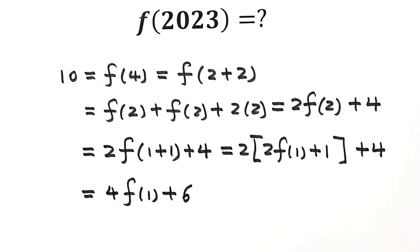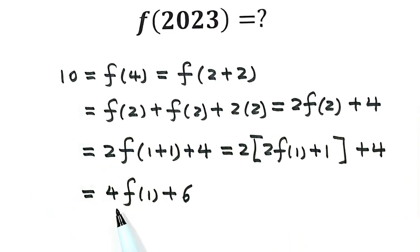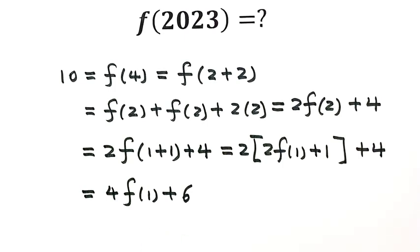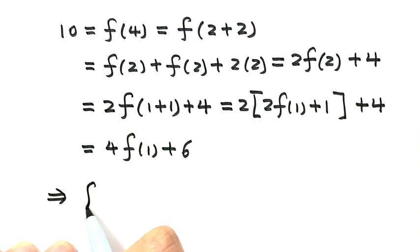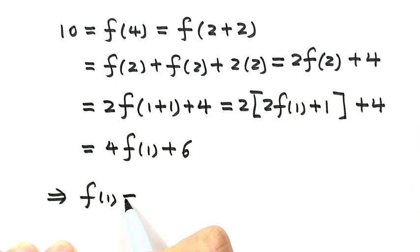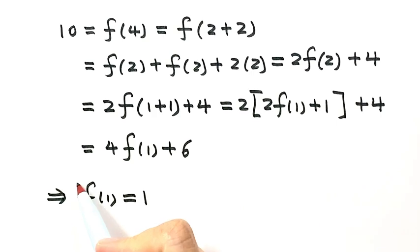So now we have 10 = 4f(1) + 6, which gives us f(1) = 1. That is the first result.